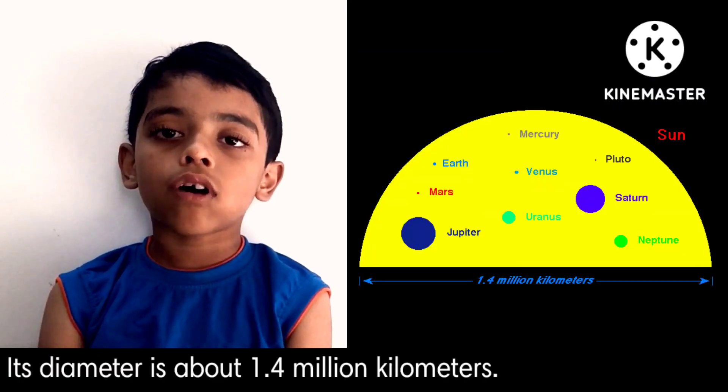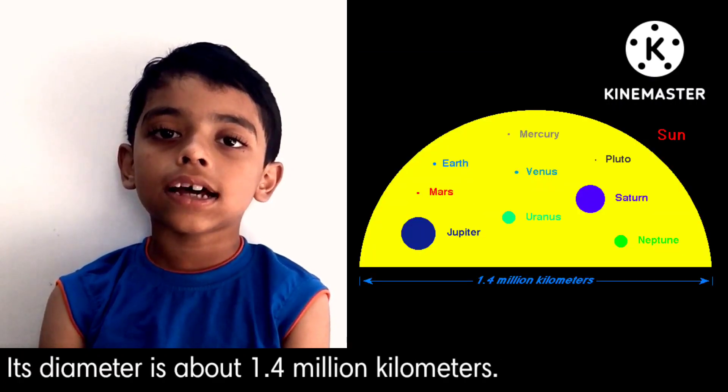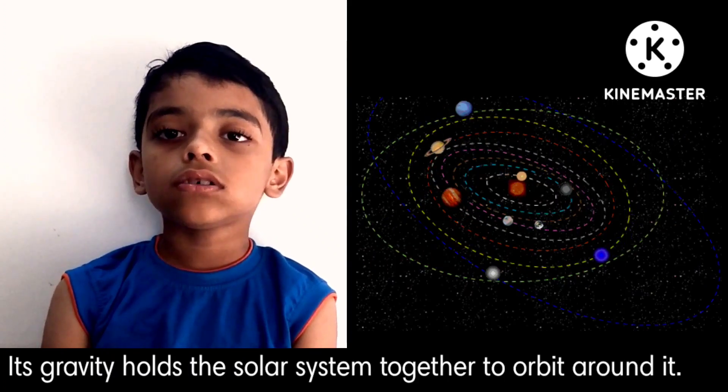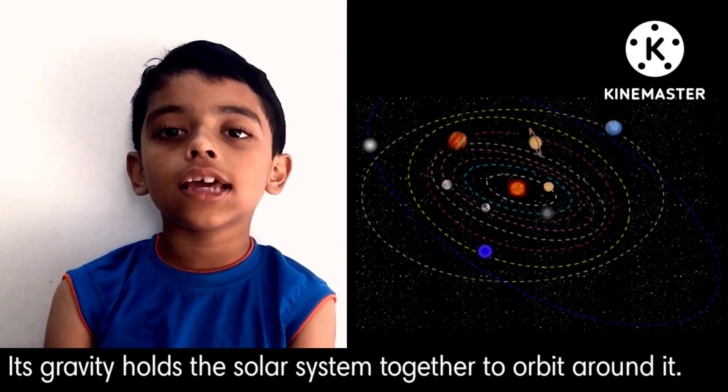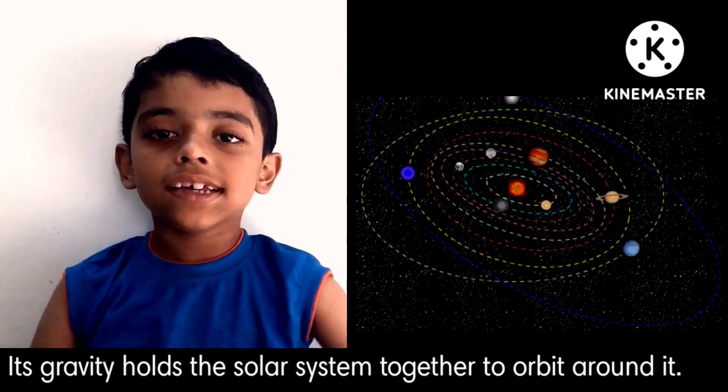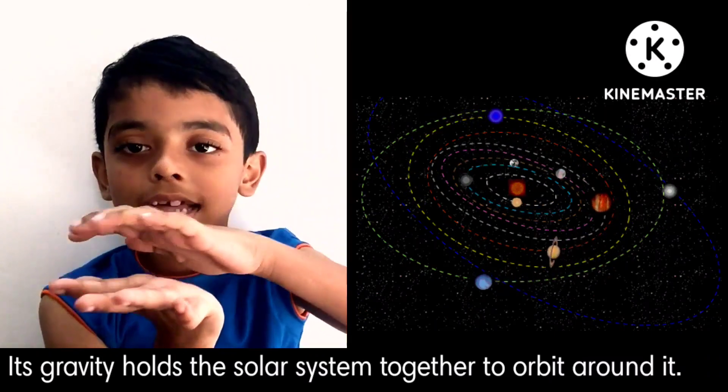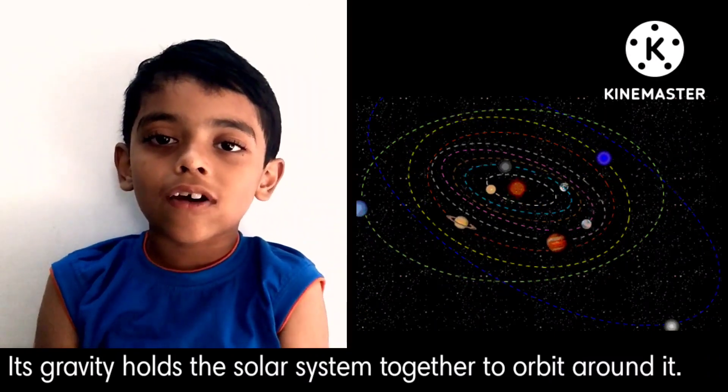Its diameter is about 1.4 million kilometers. Its gravity holds the solar system together, keeping everything from the biggest planets to the smallest debris in orbit around it.